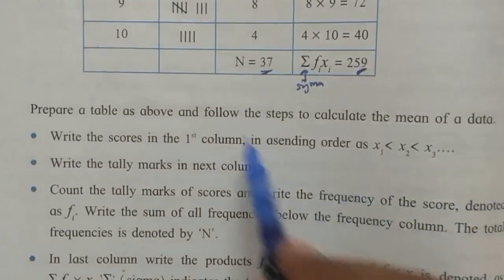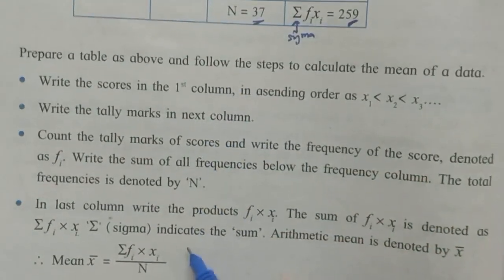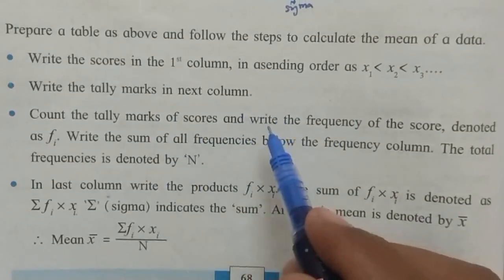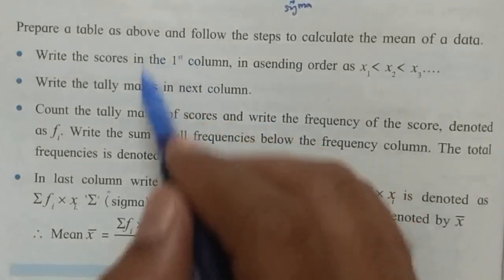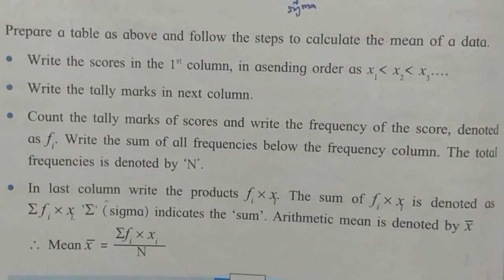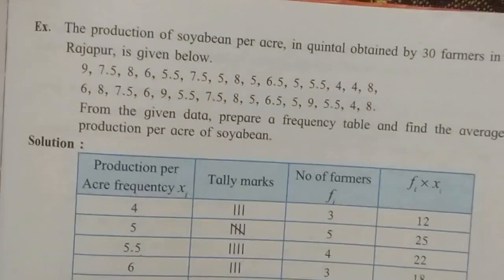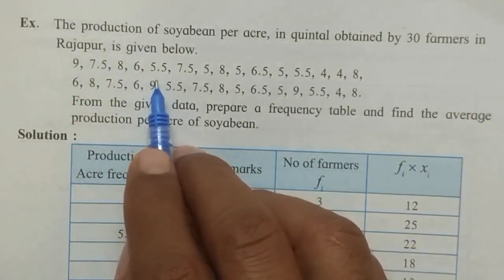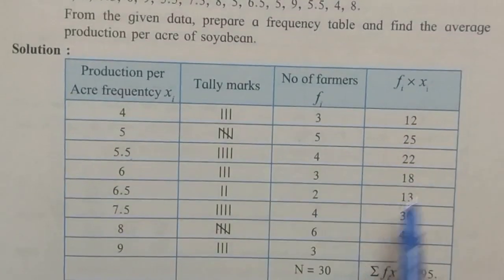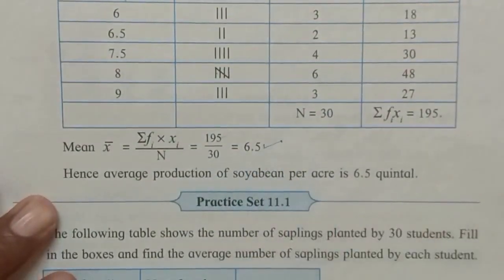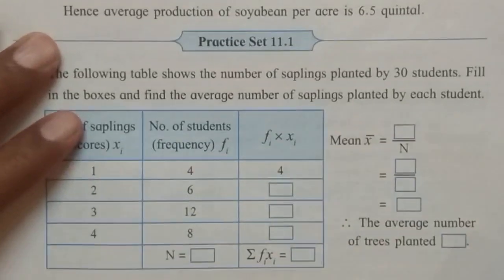Below the table, all these steps are given. You must have the textbook — go through it. Neglect karna nahi isko. If something was not clear in my explanation, you can understand it from the textbook. Almost I have explained each and everything.